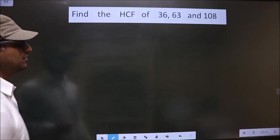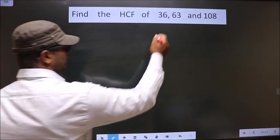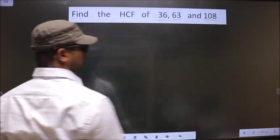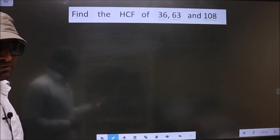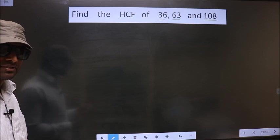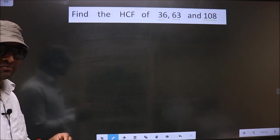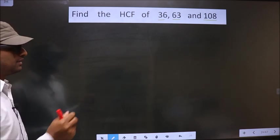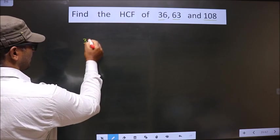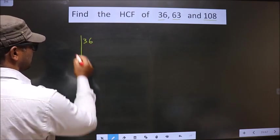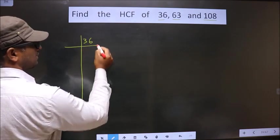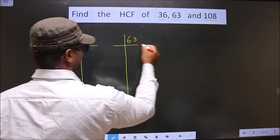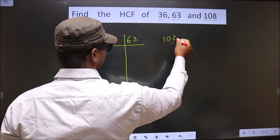Find the HCF of 36, 63, and 108. To find the HCF, first we should do prime factorization of each number separately — that is 36, 63, and 108.